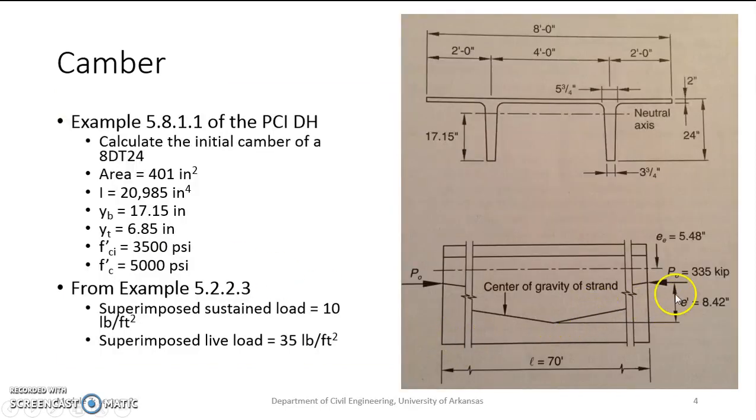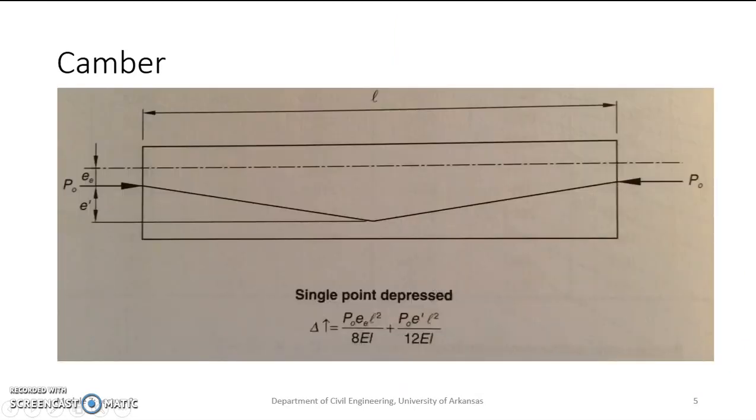It's a single point depressed strand. So we have, here's the ends of the girders. Our pre-stressing force goes down to one point in the middle and then goes back up. So our strand profile looks something like that. And from the PCI Design Handbook, here is our calculation for camber. The pre-stressing force times the eccentricity at the ends times the overall length squared over 8EI plus the pre-stressing force times the difference here. This E prime is the distance from the location of where the strands start down to where they are at mid-span times L squared over 12EI.